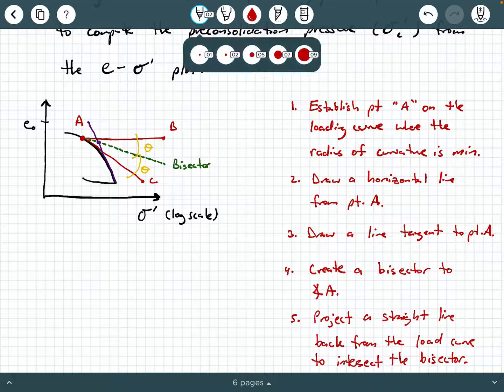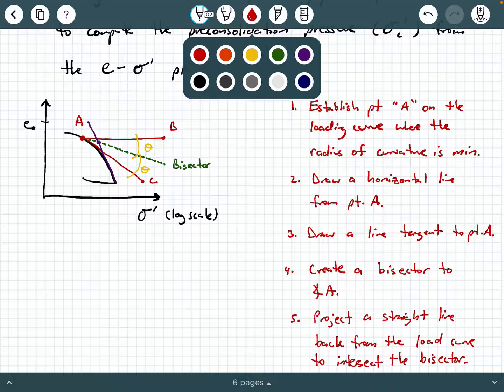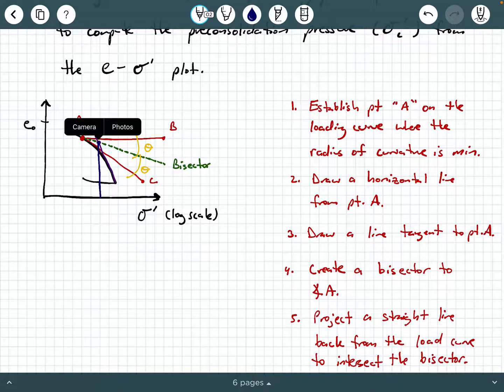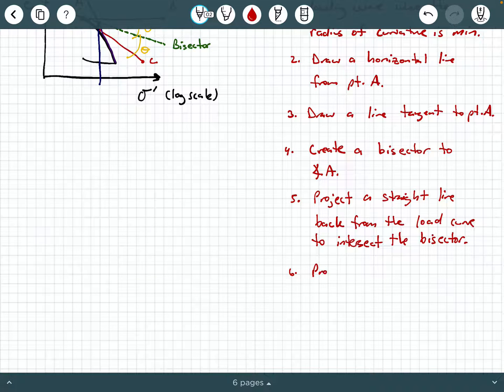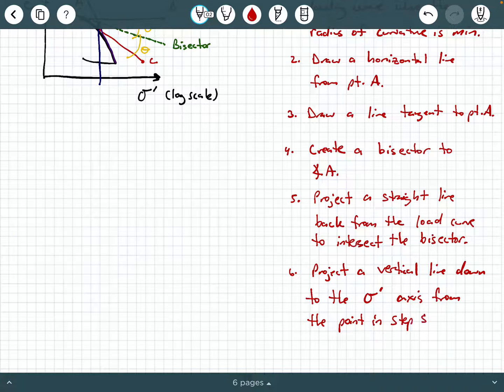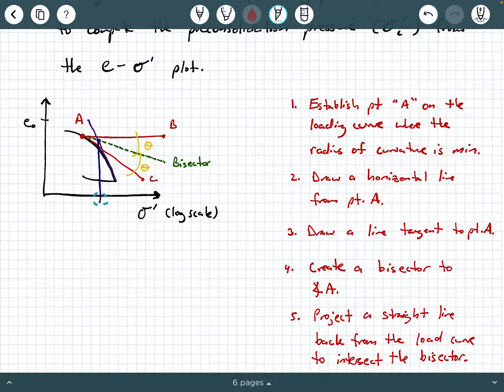And then what you do is you fire a line straight down. We're going to fire a line straight down to the horizontal axis from that point. So step six is project a vertical line down to the sigma prime axis from the point in step five. And in math, we sometimes call this value where it intersects the sigma prime axis, the abscissa. And this value right here is your pre-consolidation pressure. So I'm putting a little point here. That right there is your pre-consolidation pressure that we were looking for.